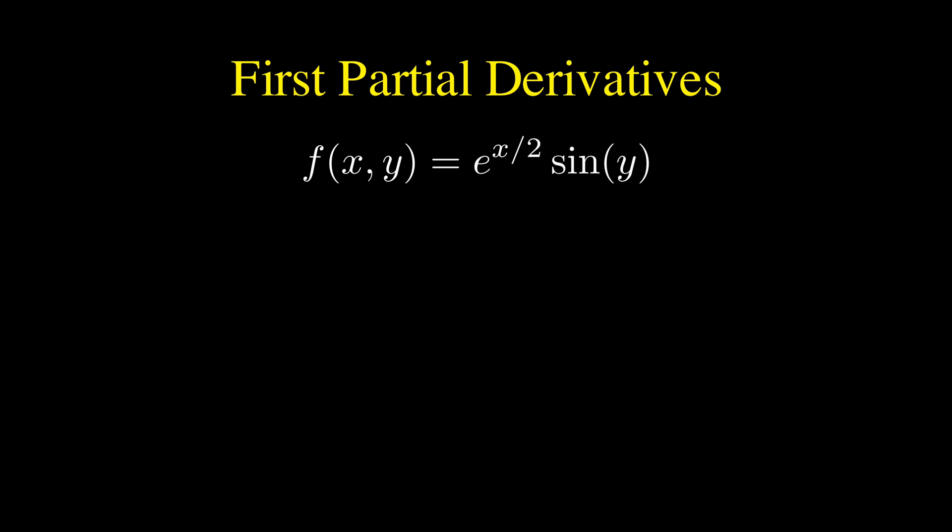So, let's actually compute this for our specific function, the one with e to the x divided by 2 times sine of y. And in order to get all the second partial derivatives, we first need to find the first partial derivatives.